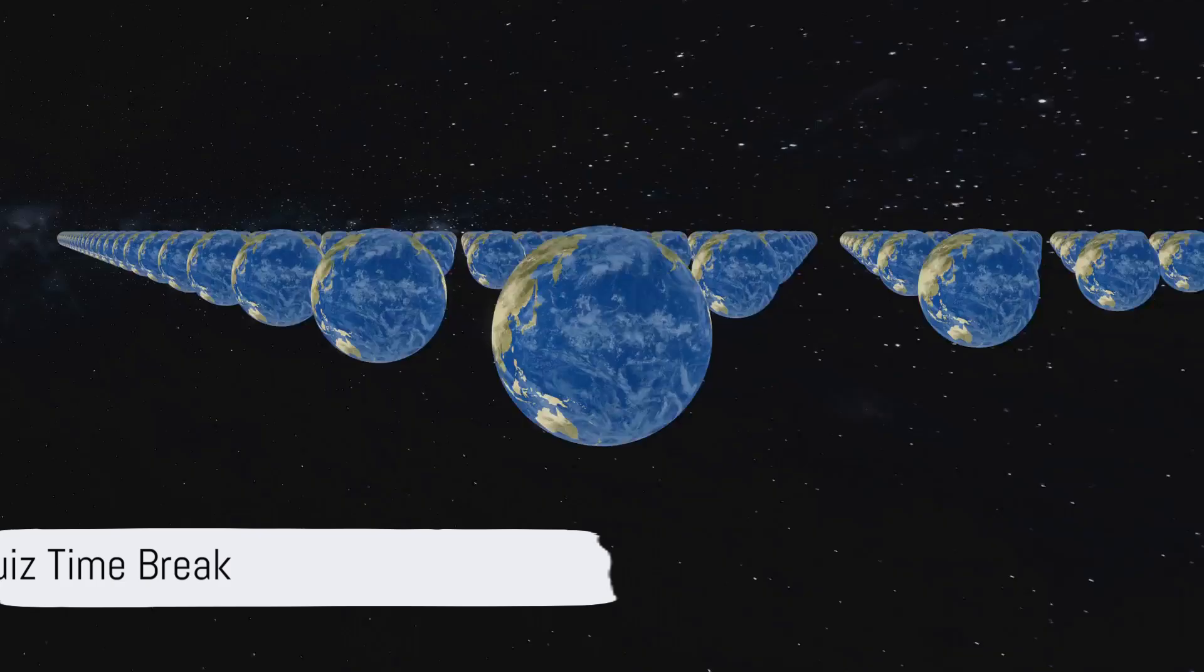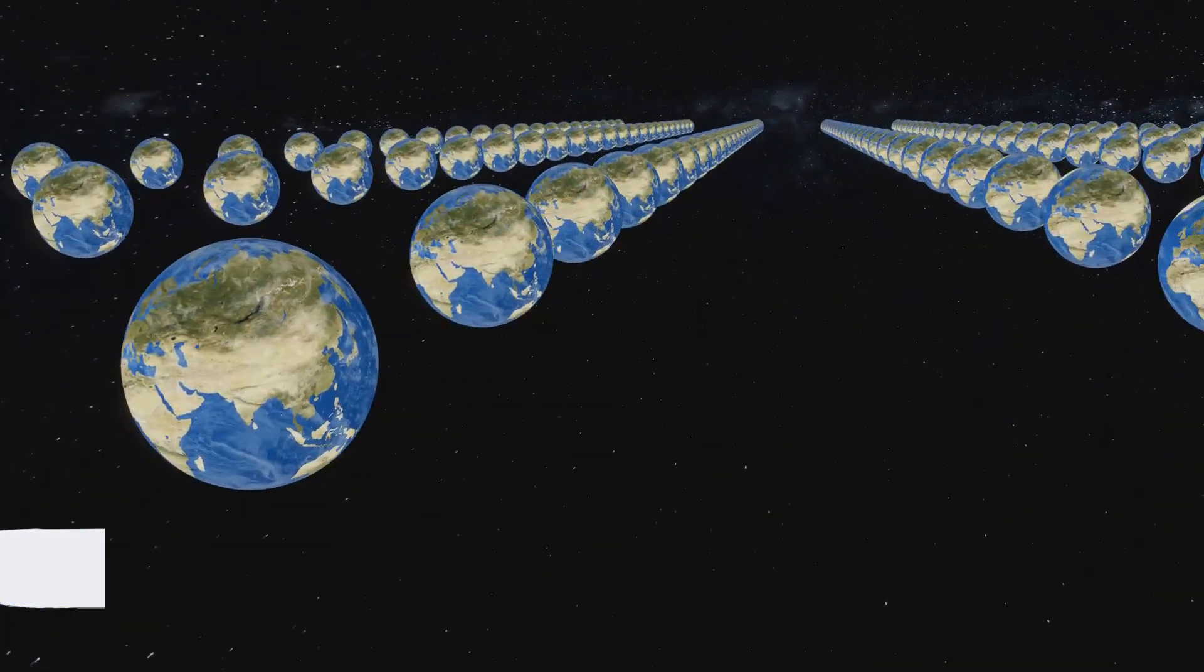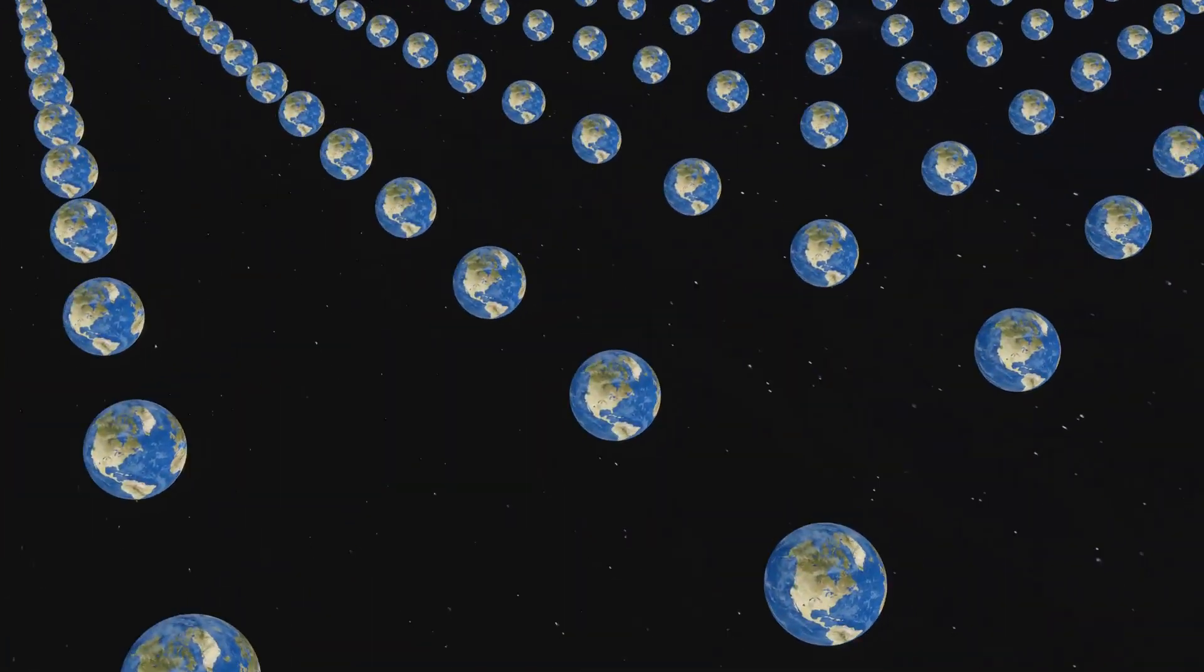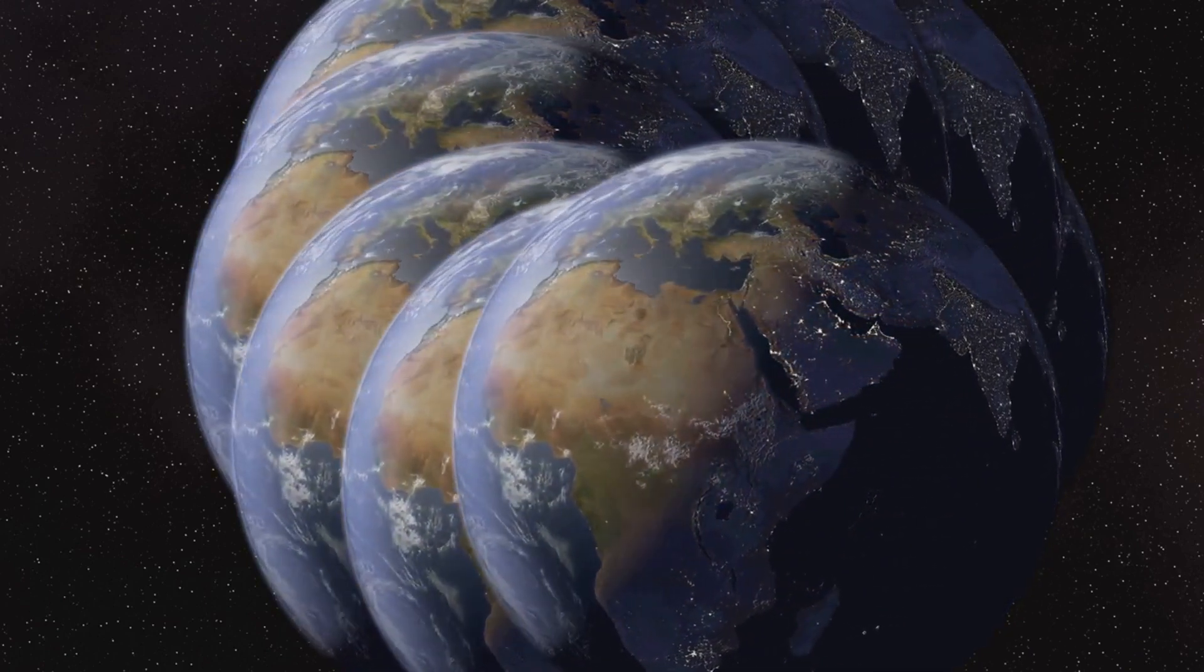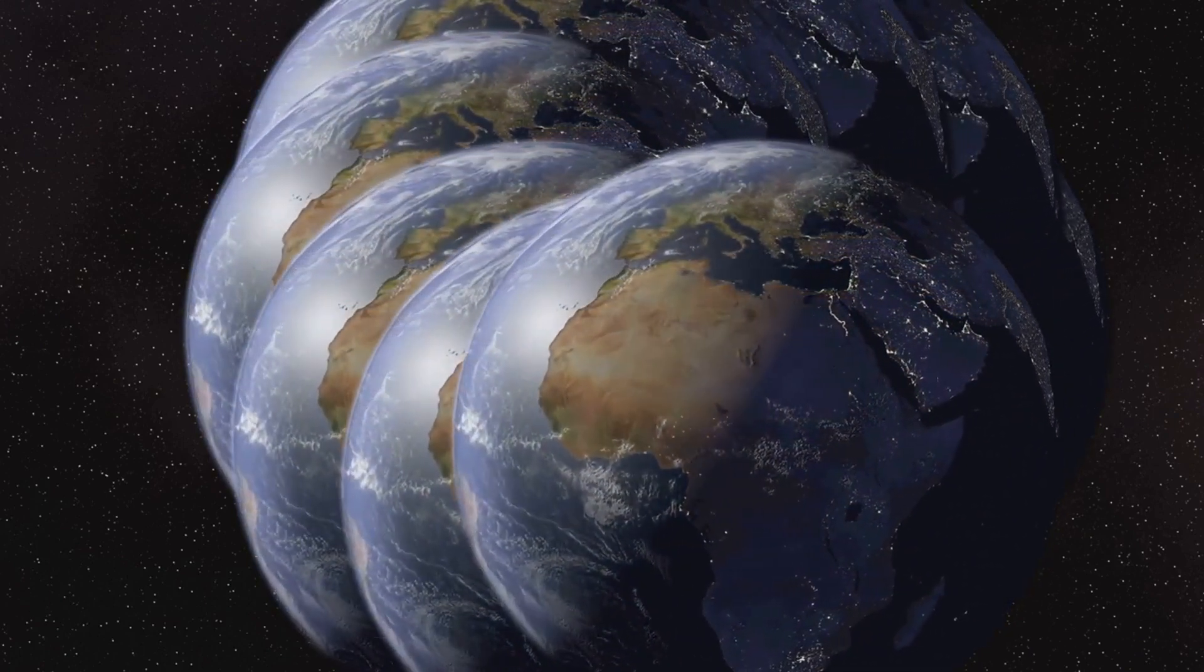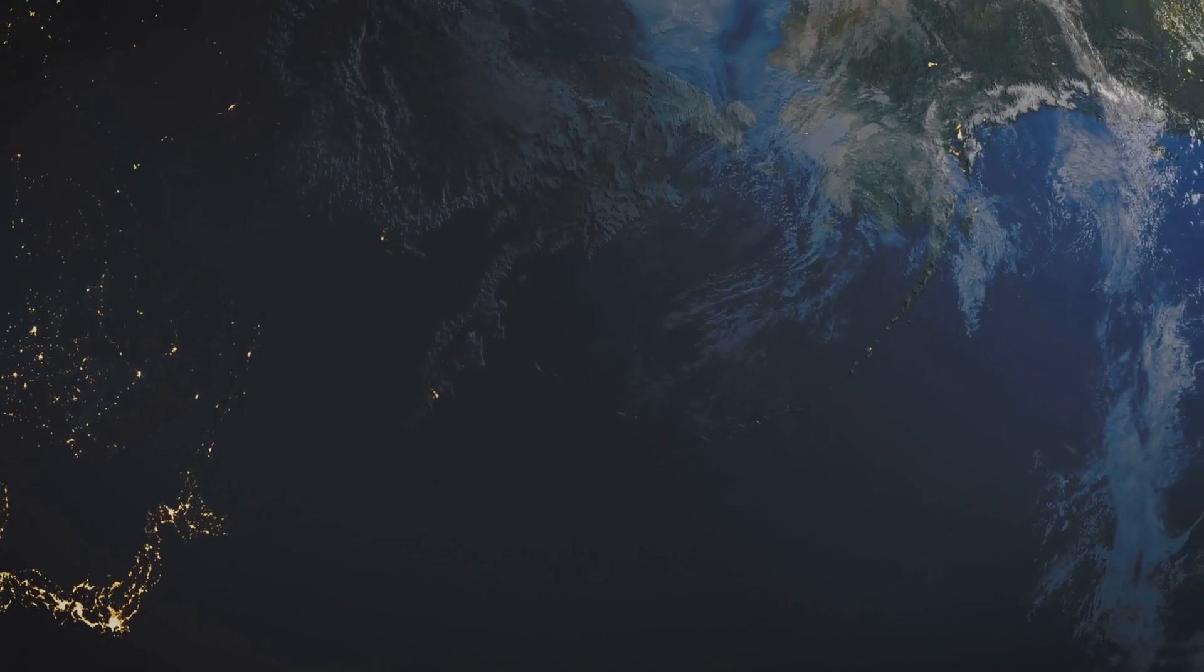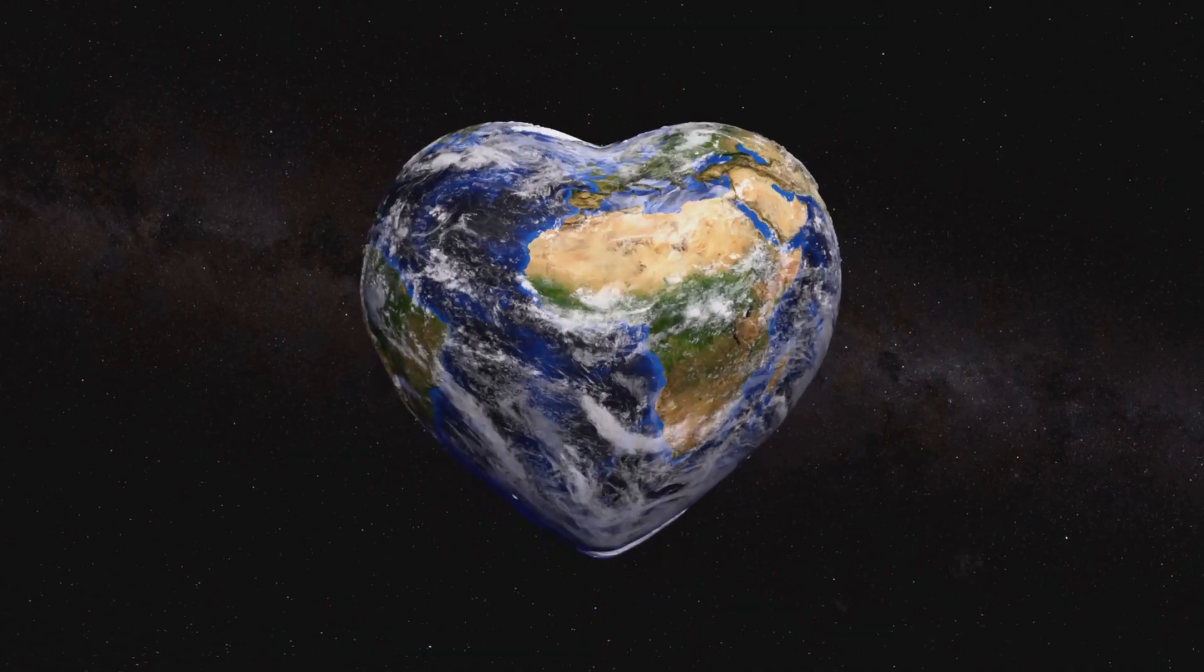Here's today's quiz. What is the name of the theoretical boundary separating one universe from another? Is it A. Event Horizon B. Quantum Loop C. Cosmic Brain Or D. Multiverse Bubble. Write your answers in the comments below. The correct one gets a heart-like from us.